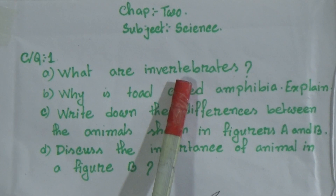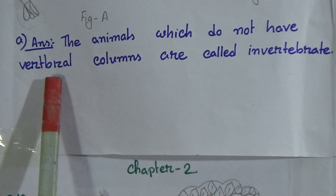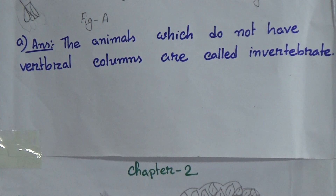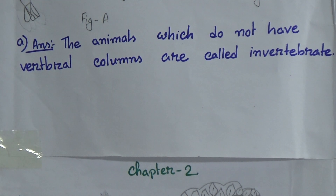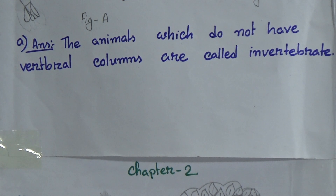Answer to Part A: The animals which do not have vertebral columns are called invertebrates. Animals are of two types: invertebrate and vertebrate. The animals which have no backbone are called invertebrates, and the animals which have a vertebral column are called vertebrates.